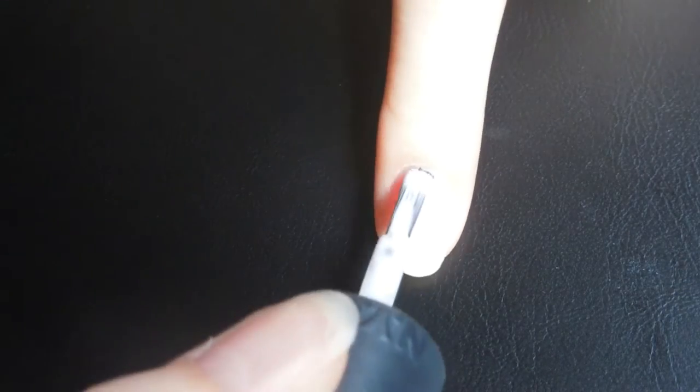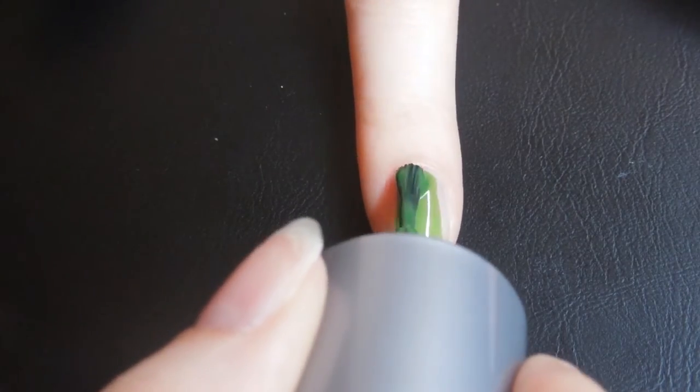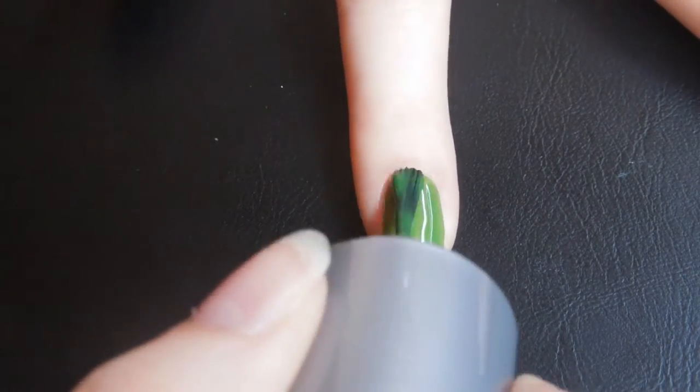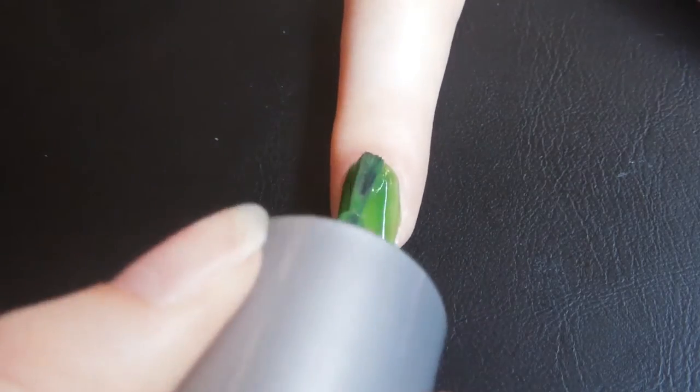Apply a base coat to protect your natural nails and add two coats of a green nail polish. Let it fully dry.